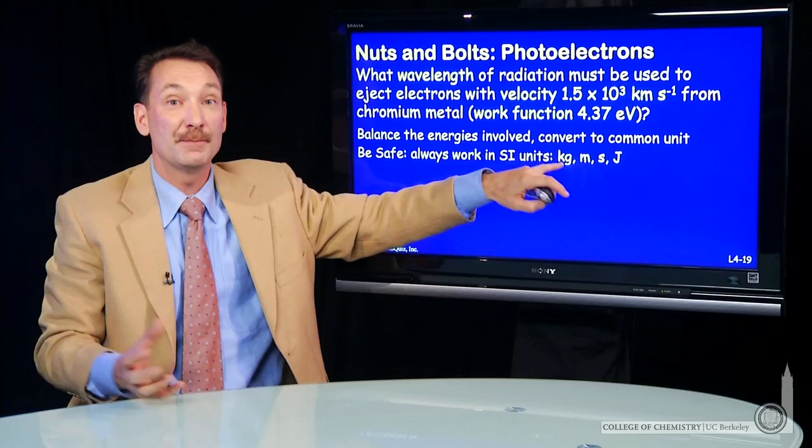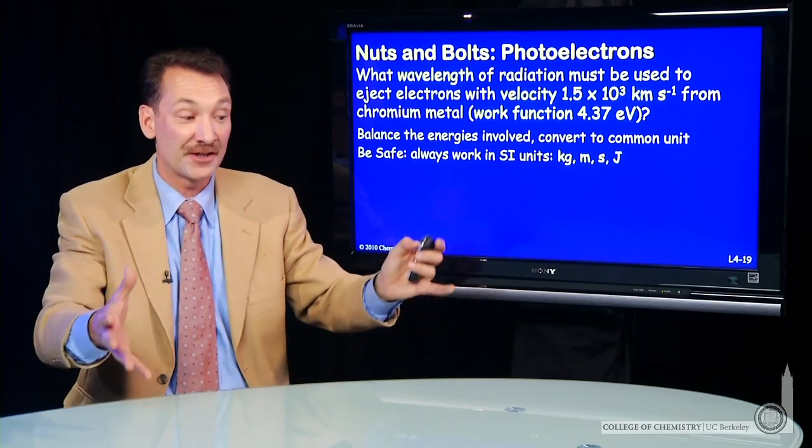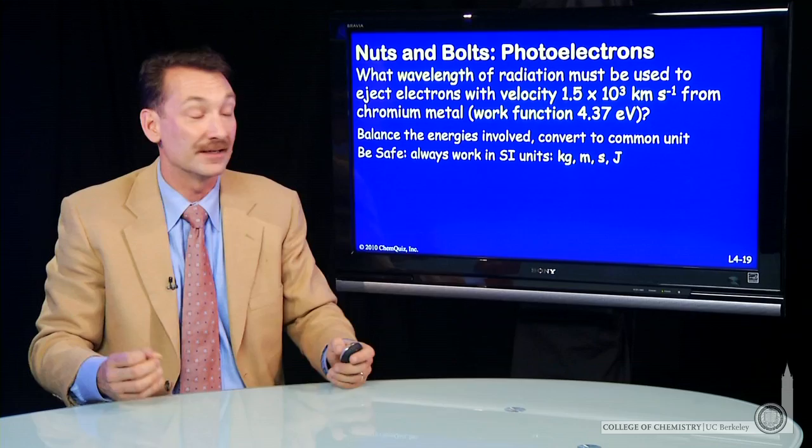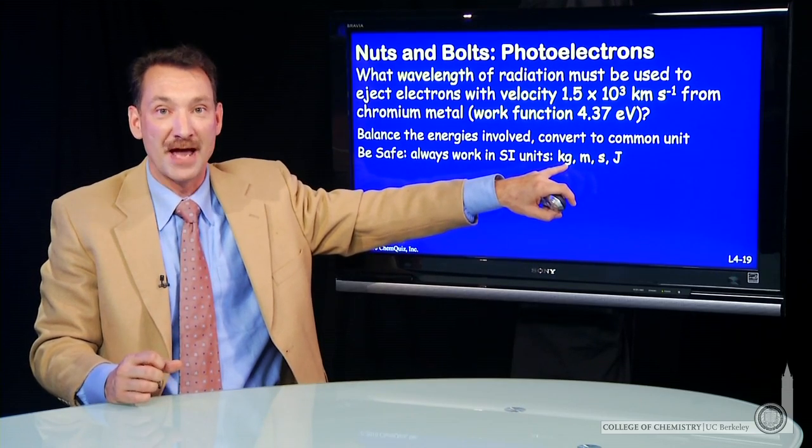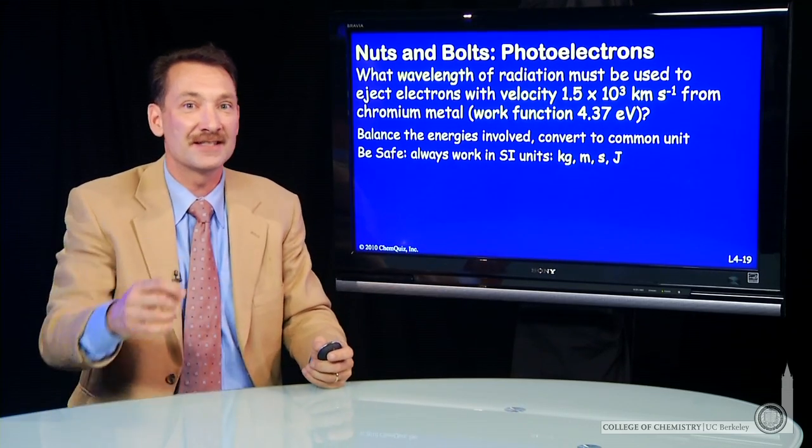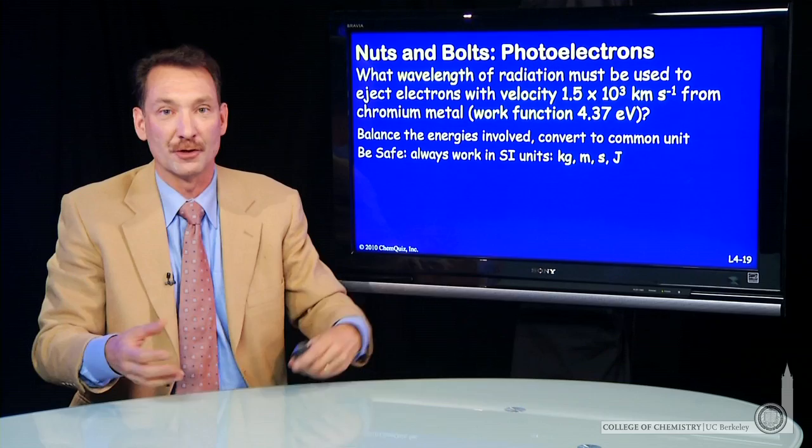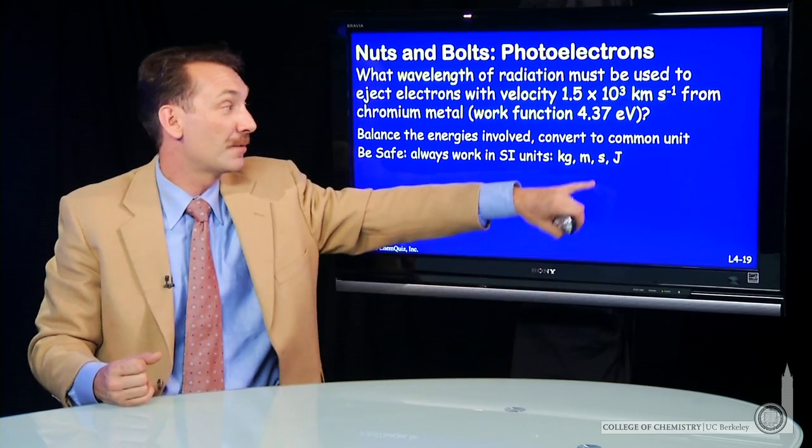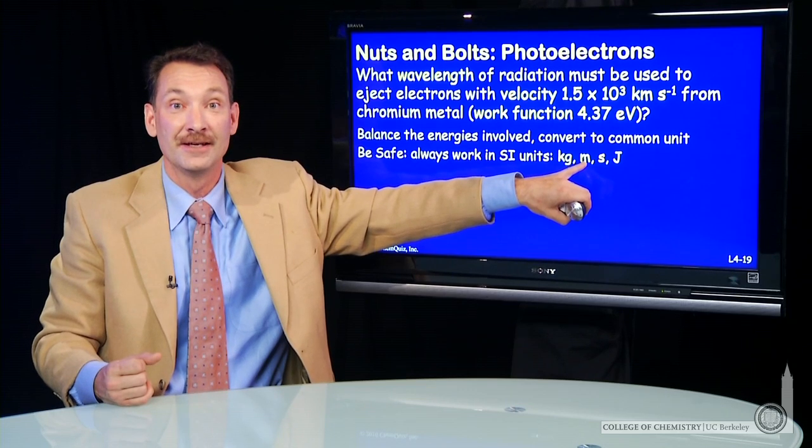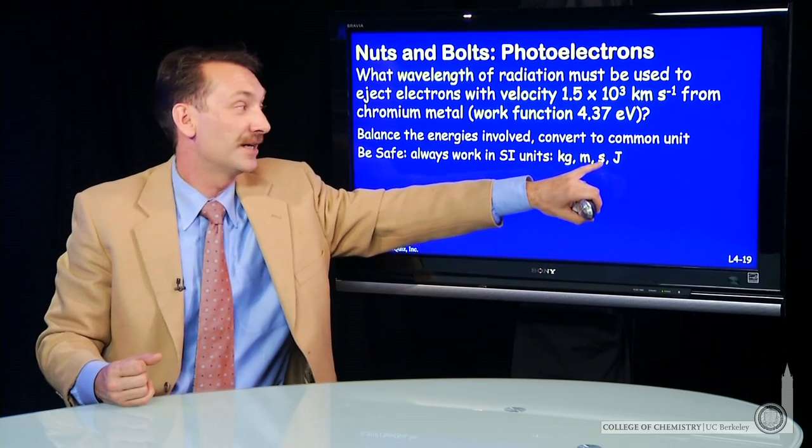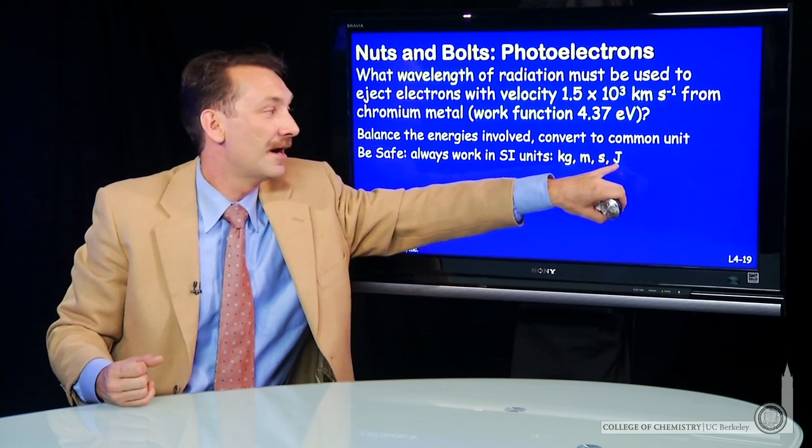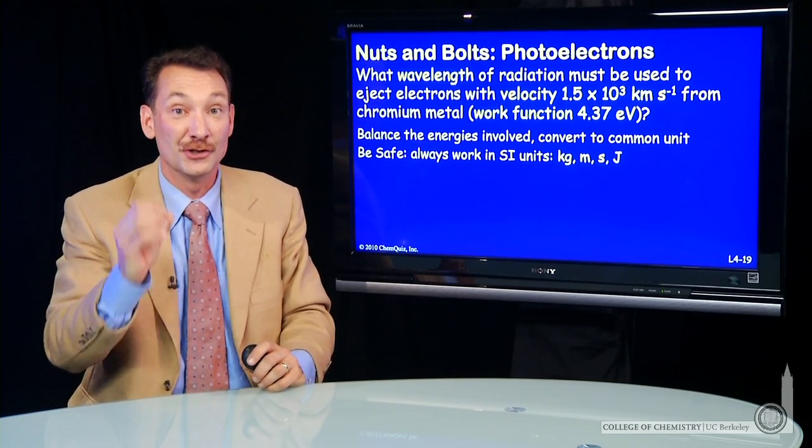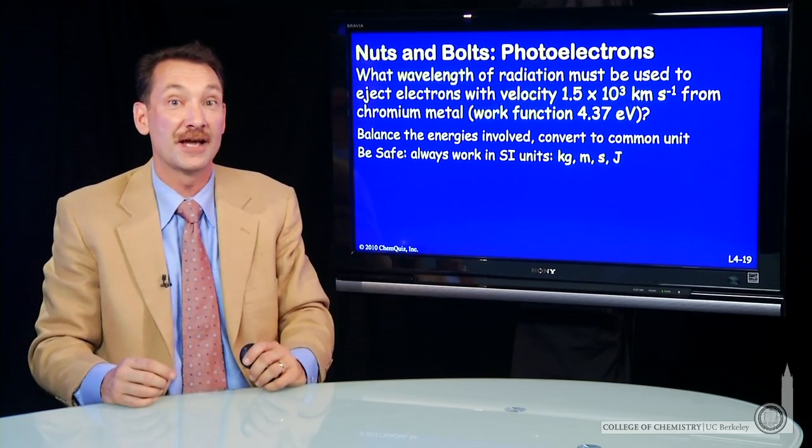Now, we do that to keep all the things we multiply together consistent unit-wise. We're dimensionally consistent. We always use kilograms for mass. So don't just put your masses into your equations with grams or pounds or some random mass unit. If you come across a mass, convert it to kilograms. If you come across a distance, a length, convert that to meters. A time, seconds. An energy, joules. That will keep your units consistent and allow you to do the calculations correctly.